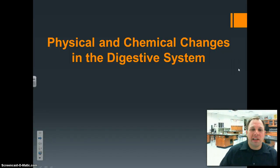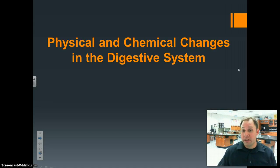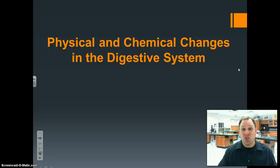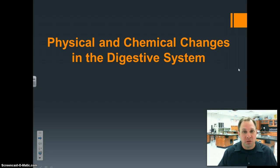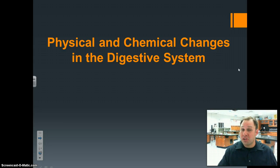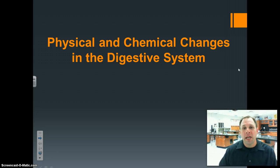In this video we're going to take a look at the physical and chemical changes that occur in the digestive system. We've already identified that physical changes are changes where substances change but still remain the same substance — like taking an apple and turning it into applesauce, it's still an apple. Chemical changes are where you take a substance and turn it into something completely new, like when saliva turns bread into sugar. We're going to look at the different changes at each stage of the digestion process.